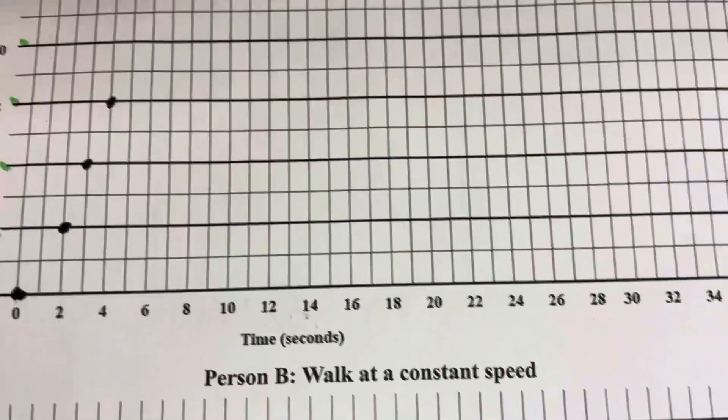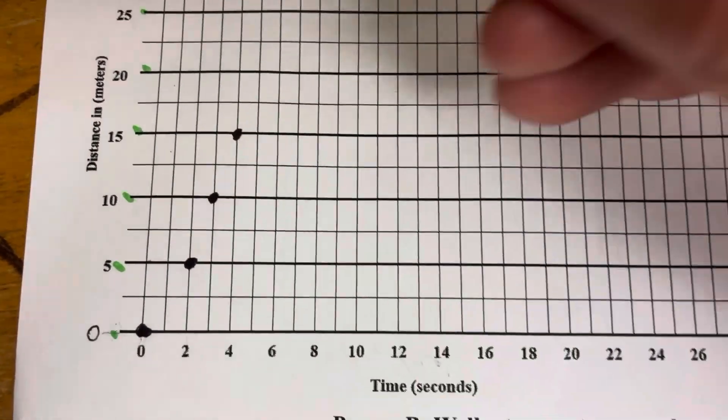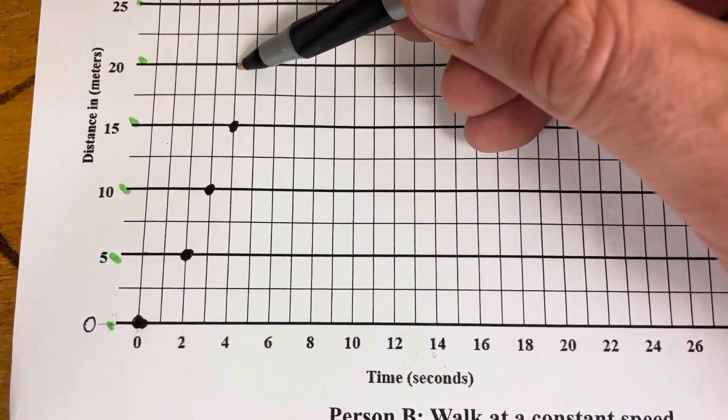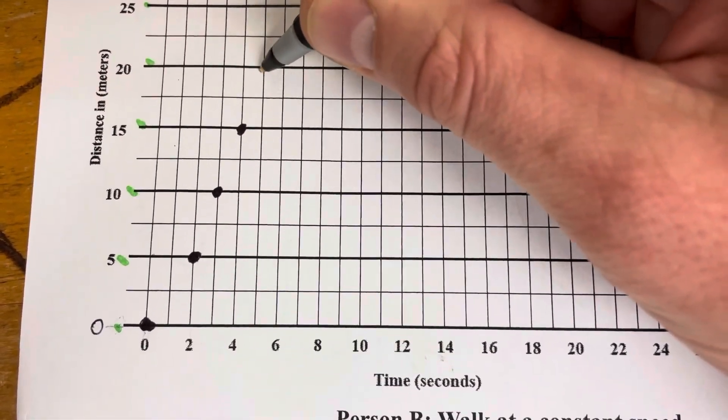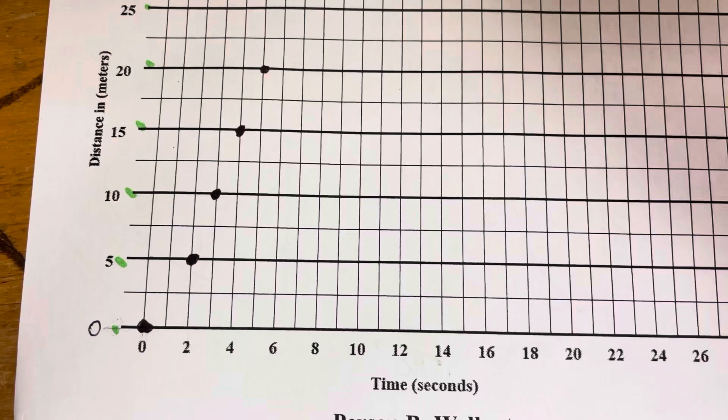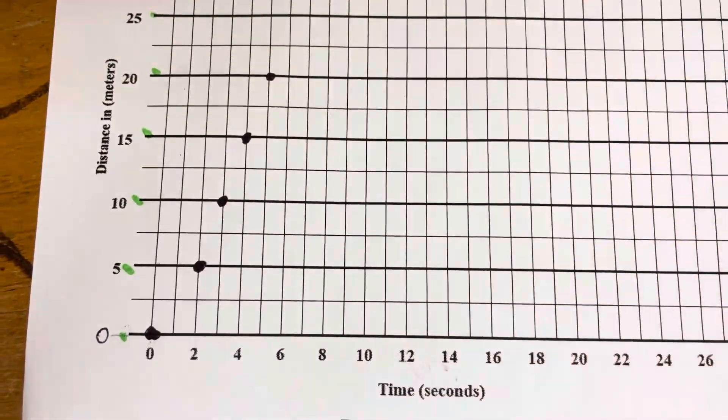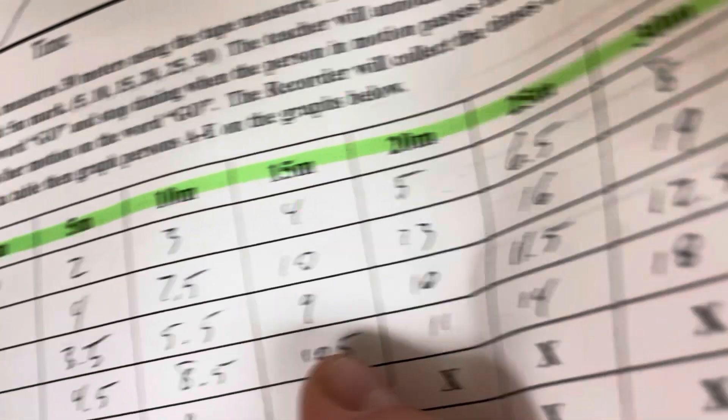At 20 meters it took us 5 seconds. Whatever student was running, it took them 5 seconds to go 20 meters. We're going to go over to the 5 and put a nice big dot. The 5 is in between the 4 and the 6. It's not labeled, but 5 is right between 4 and 6.